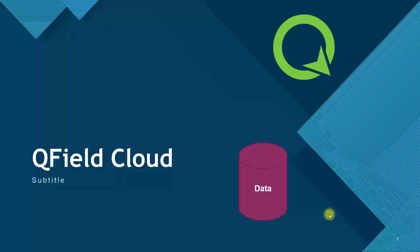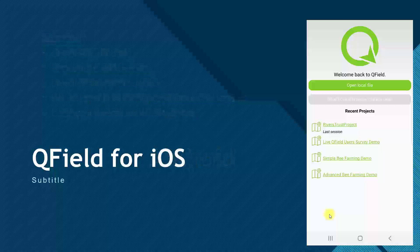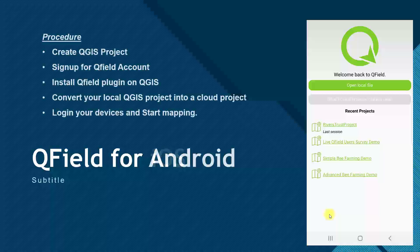For QField Cloud, all you have to do is create your project on the cloud instead of creating it on your PC. Log into your project with your phone, tablet, or whatever device you have, and you'll automatically be able to access whatever layers or shapefiles you already had in your project. The procedure is the same for both Android and iOS — the interfaces are almost identical with only minor icon and text differences.